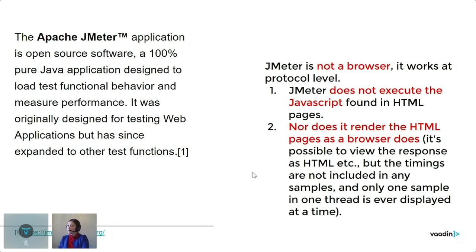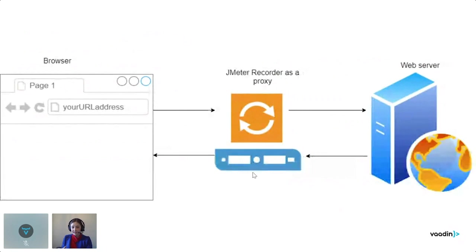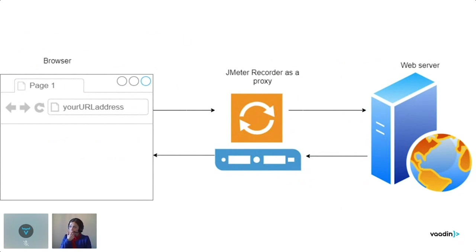You can construct a test script by hand, configuring every single request manually, and it will work. But it's easier to record first all those events you send. JMeter's Recorder works as a proxy — it intercepts all the requests you're sending to the web server, and the web server's answers also go through JMeter so it can capture those requests.